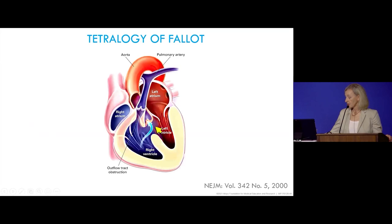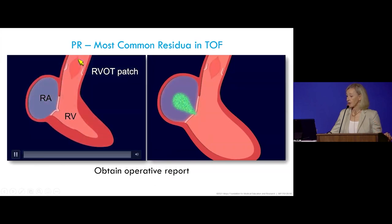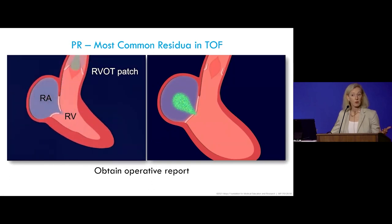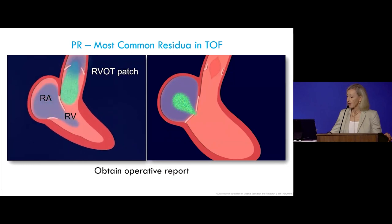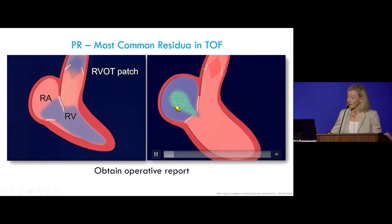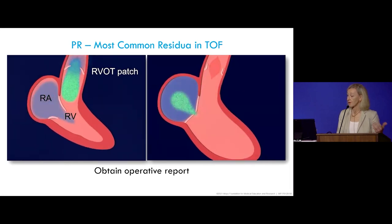Tetralogy consists of four things, but it's really the anterior or cephalad displacement of the conus septum that causes right ventricular outflow tract obstruction and secondary right ventricular hypertrophy, along with the subaortic VSD and aortic override. Surgical intervention includes patching the right ventricular outflow tract to relieve obstruction, thereby rendering the pulmonary valve incompetent. Although this is tolerated well early in life, patients ultimately develop progressive right heart enlargement, annular dilatation, and eventually tricuspid valve regurgitation, increasing the likelihood of arrhythmias and right heart failure.